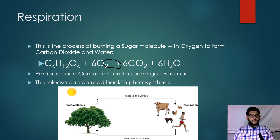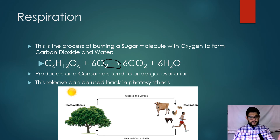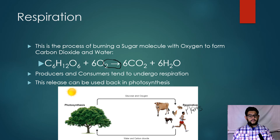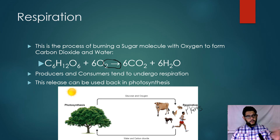It's important to remember that producers and consumers both undergo respiration. Plants are also undergoing respiration — they're doing photosynthesis, but they're also respiring at the same time. A plant can make glucose and oxygen, and then both plants and animals would respire and release CO2 and water that can be reused again. Those are the two sides of the coin when it comes to the carbon cycle.